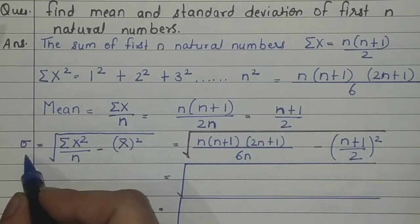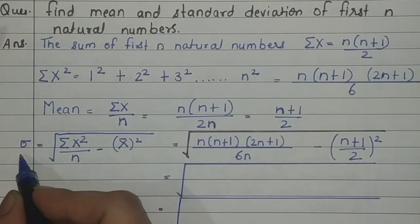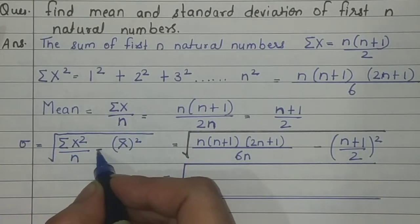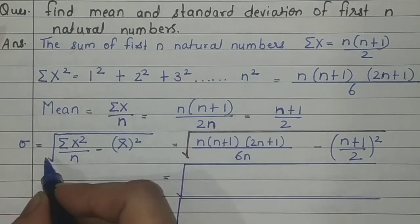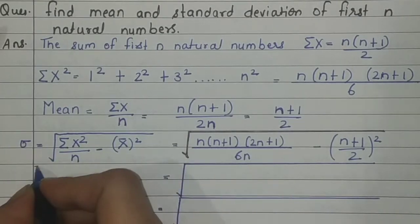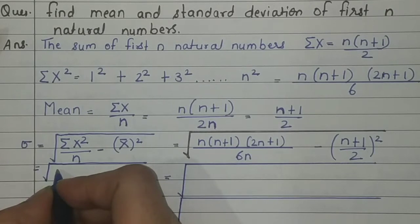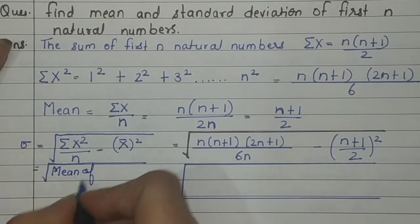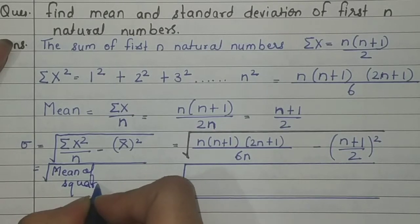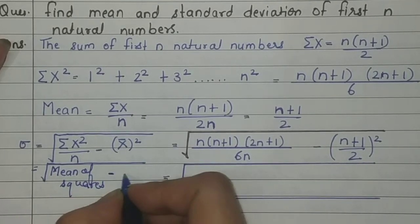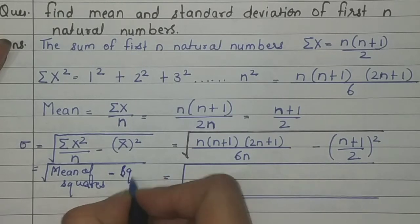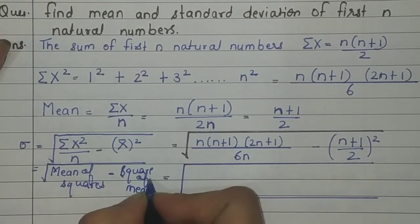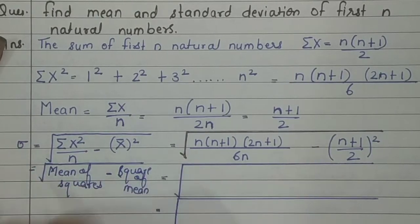For standard deviation, the formula is: σ = √(mean of squares − square of mean). That is, σ = √(Σx²/n − x̄²). We take the mean of squares, subtract the square of the mean, then take the square root to get standard deviation.